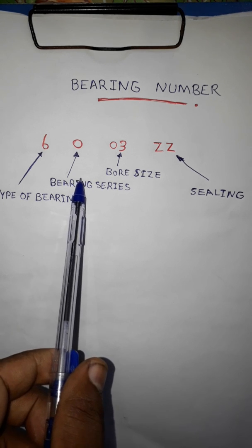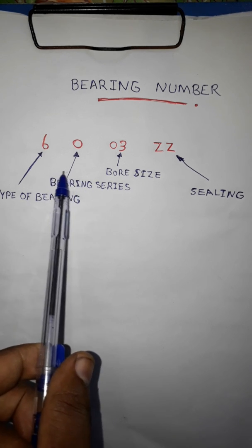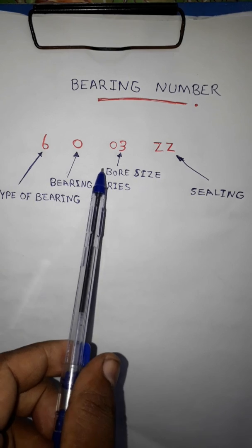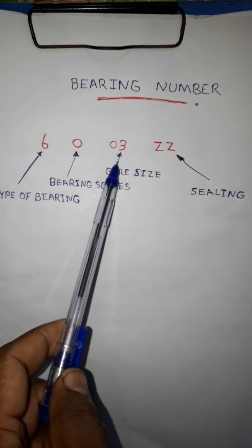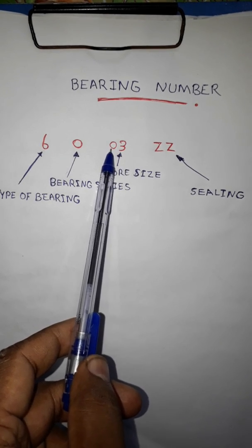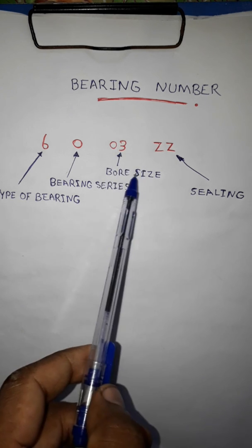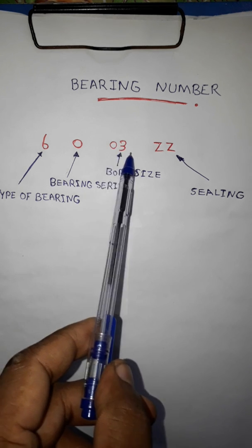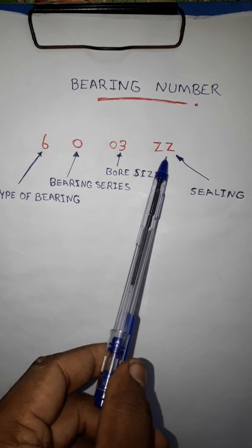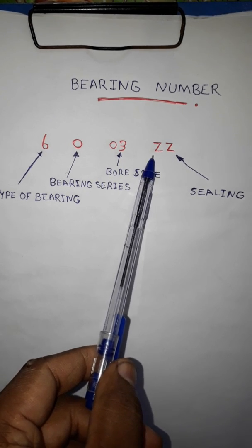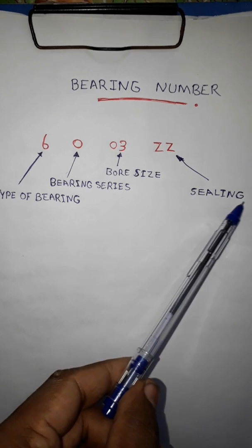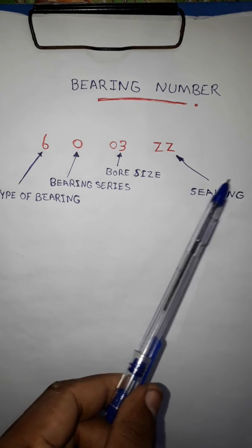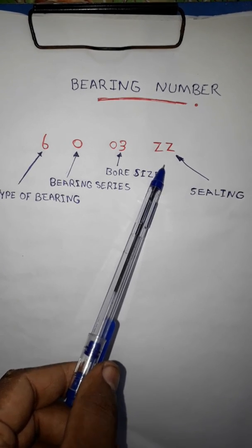The bearing series: bearing series indicates whether it is a light duty or heavy duty bearing. The 3rd and 2nd numbers are the size. The English letters indicate sealing and shielding — the bearing has a seal and a shield of metal. That is the same as the English letter.